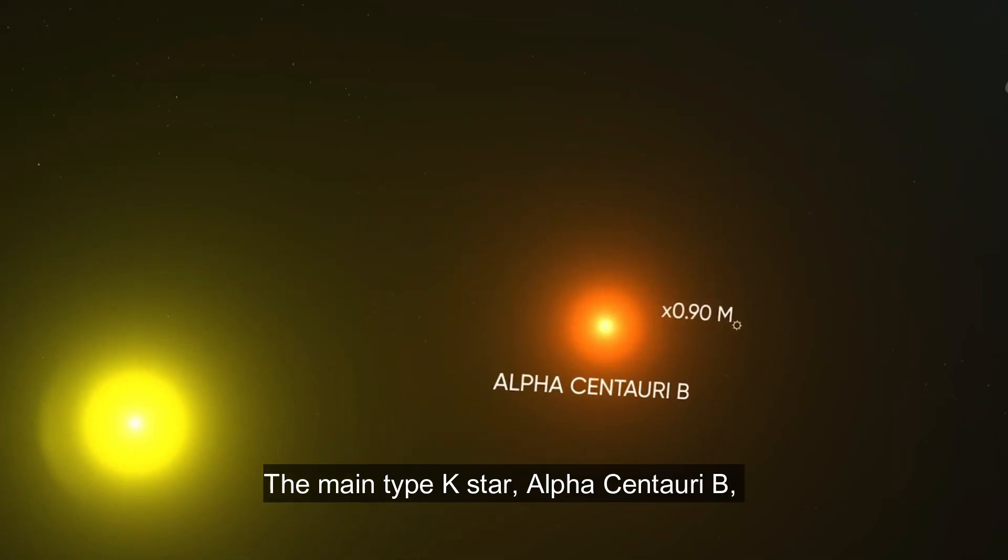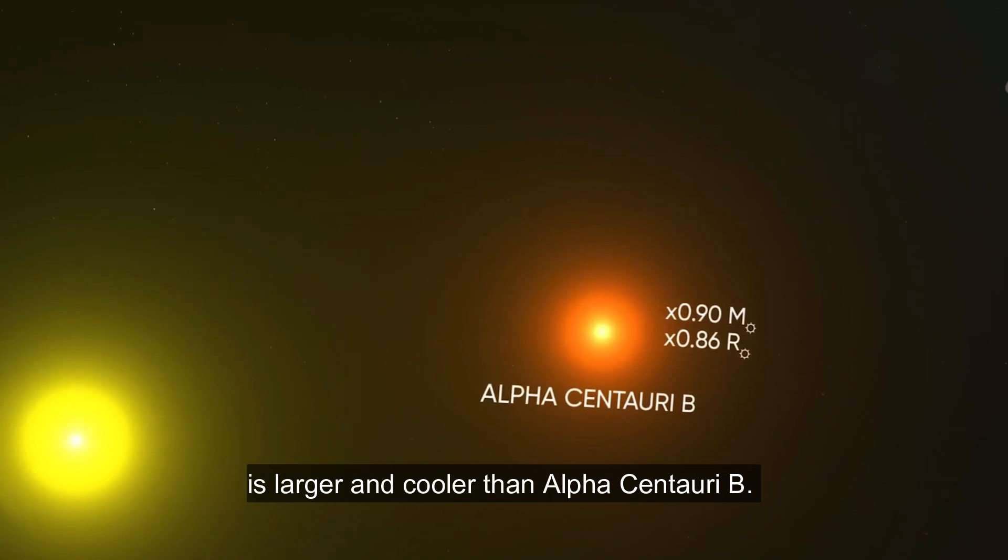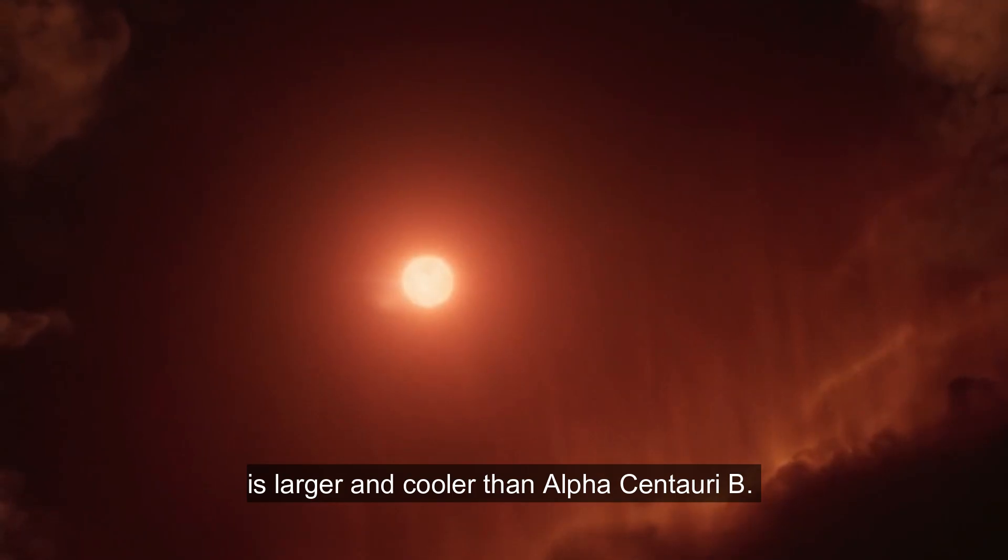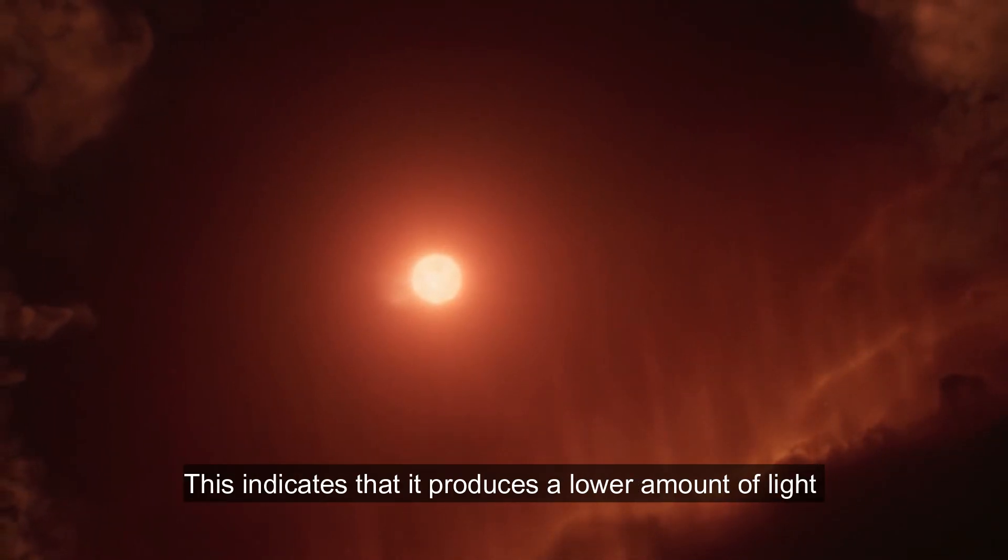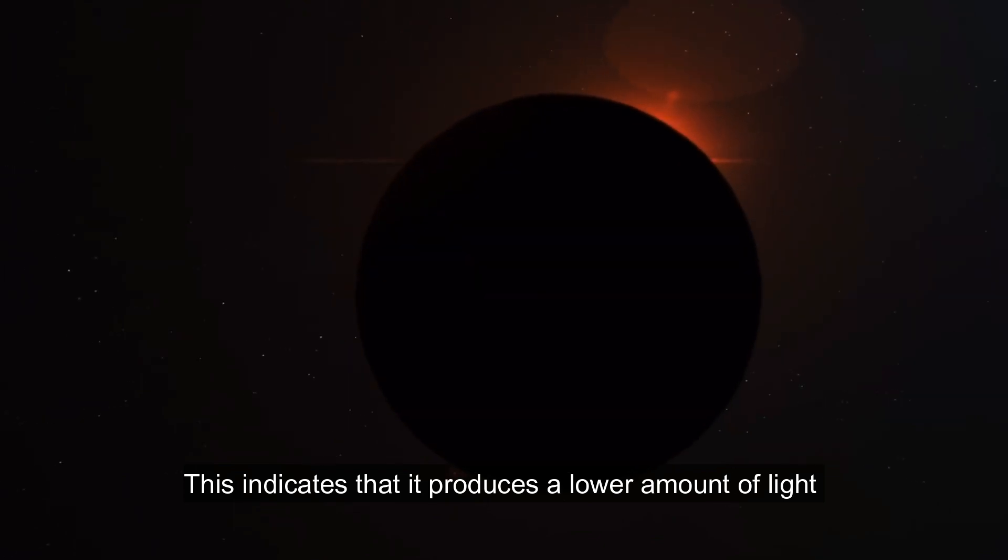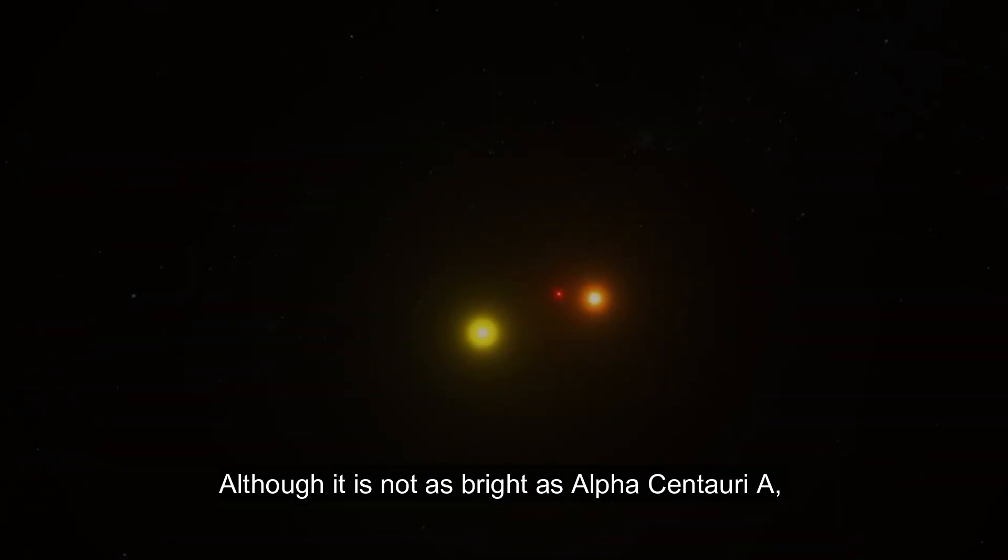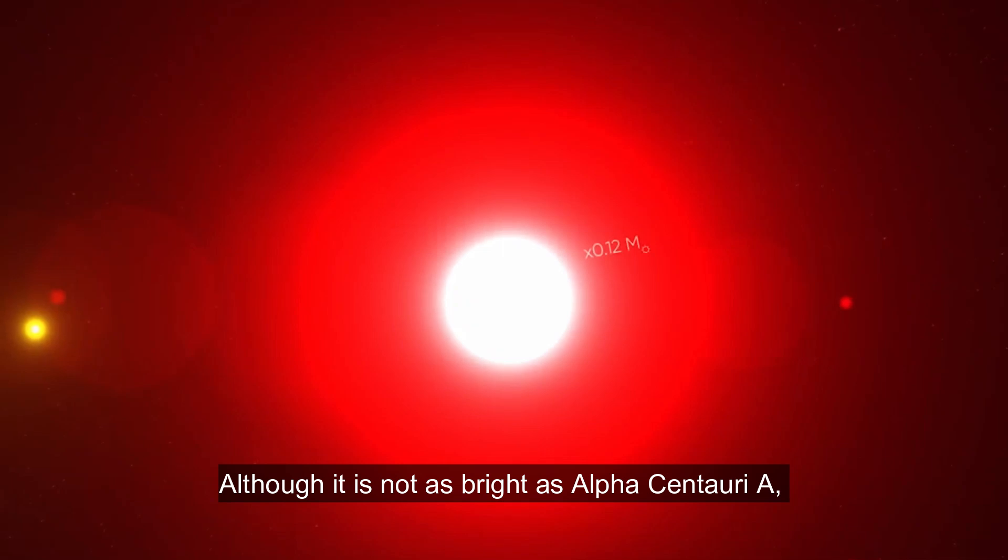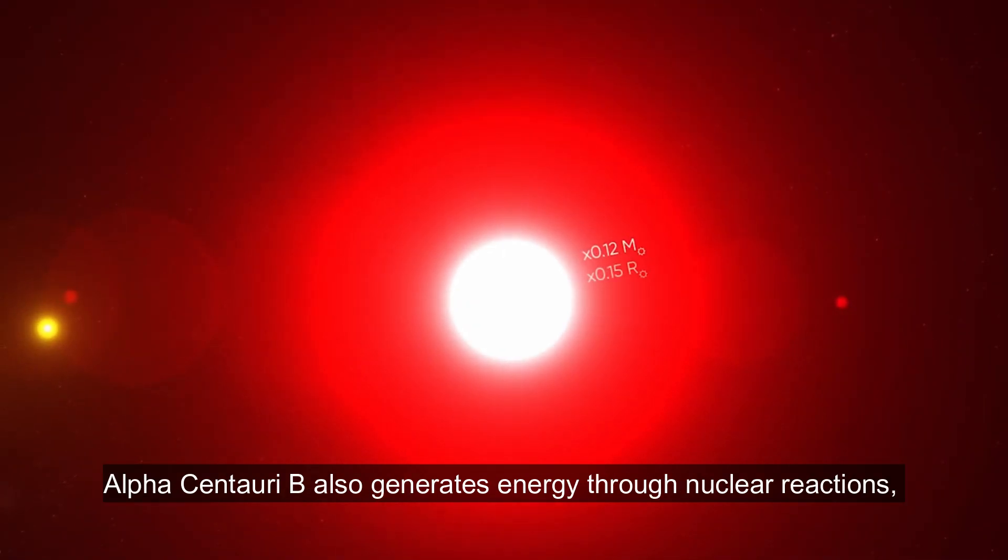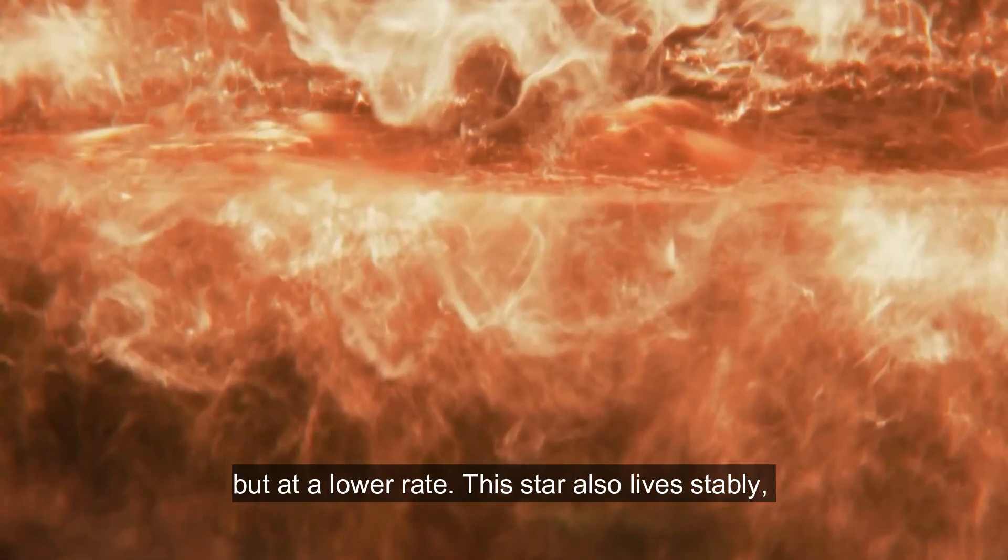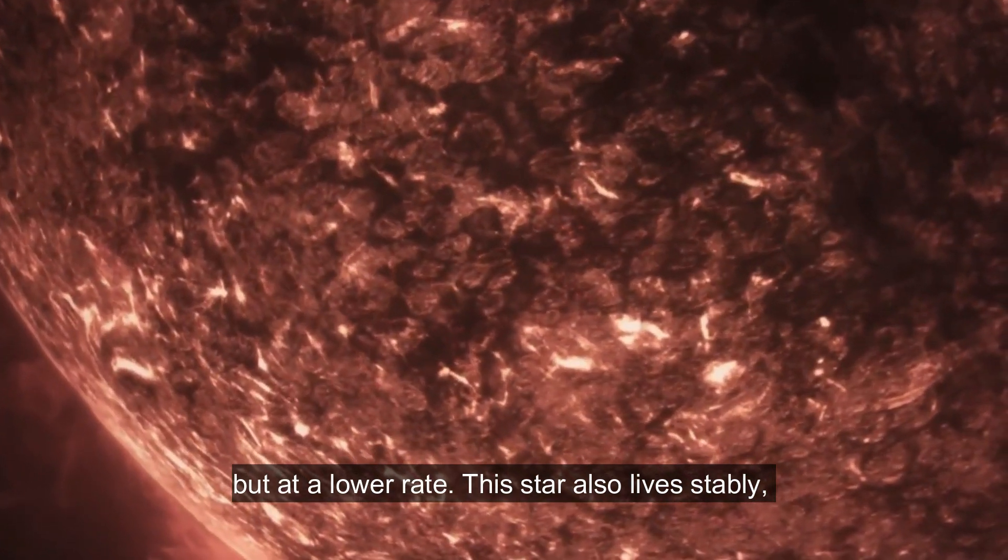The main K-type star, Alpha Centauri B, is smaller and cooler than Alpha Centauri A. This indicates that it produces a lower amount of light than Alpha Centauri A. Although it is not as bright, Alpha Centauri B also generates energy through nuclear reactions but at a lower rate. This star also lives stably.